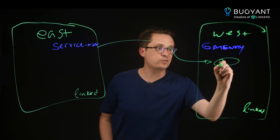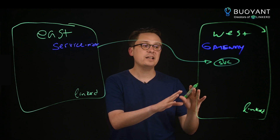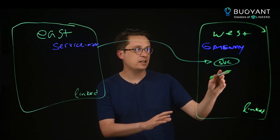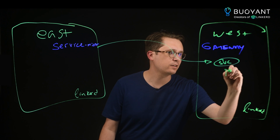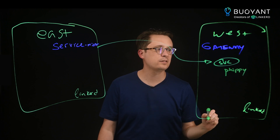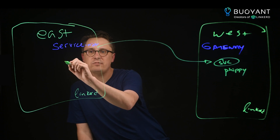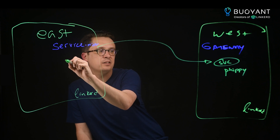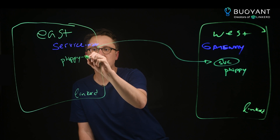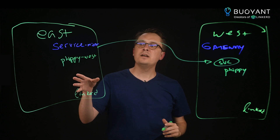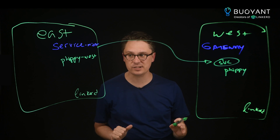The service mirror watches services in the West cluster, and as services are created, it can import them. So let's say in the West cluster we create a FIPPY service with pods. The service mirror will observe that and replicate a service in the East cluster called FIPPY West. This allows applications in the East cluster to address that service and access pods in the West cluster as if they're in a single cluster.